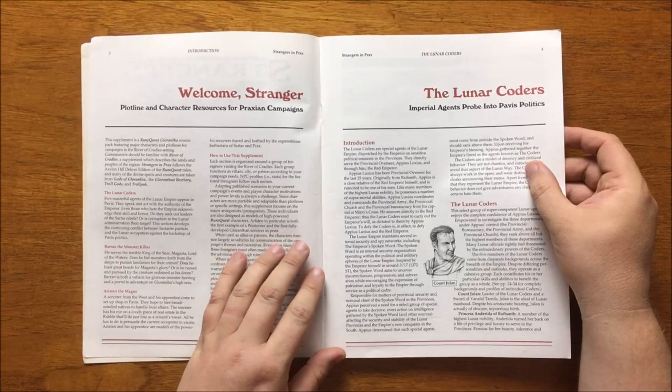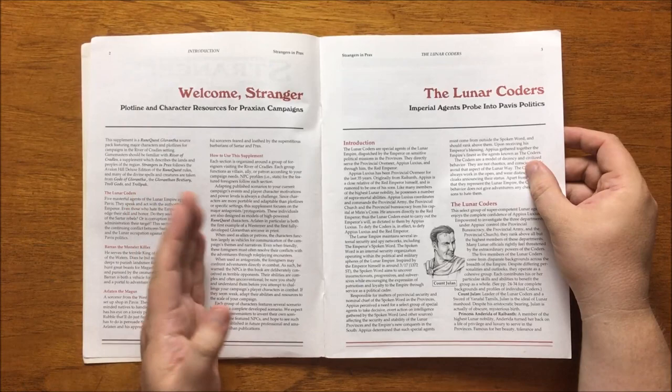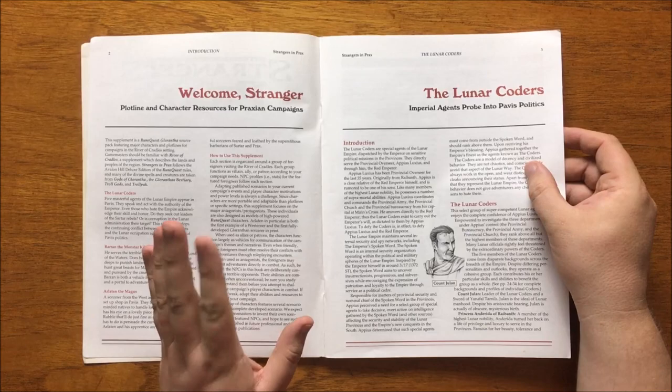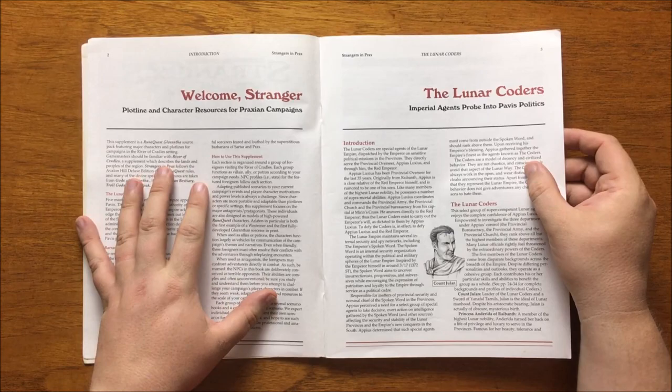Barun the Monster Killer, a servant of Magasta the King of the Seas who destroys great monsters of the Deep to gain his lord's favour, and Arlethan the Magus, a wizard and his apprentice who have come to set up shop in Pavis despite the ingrained superstitions of the locals. Each of these can act as patrons, foes, or provide adventure hooks for groups of varying power levels. It makes the point that these are supposed to be models of high-powered characters, and that Arlethan is the first fully developed Gloranthan sorcerer in print.